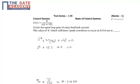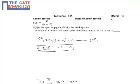The given equation can be reduced to standard second-order form, and from this equation it can be compared with the standard second-order system. Comparing, 2ηω_n is directly equated to 15, and ω_n² is equal to k.